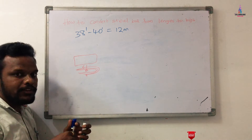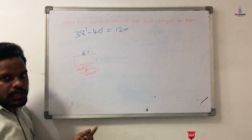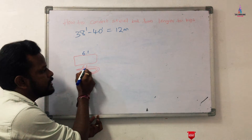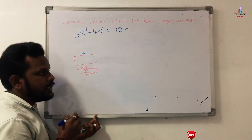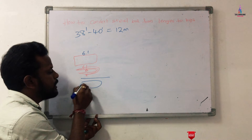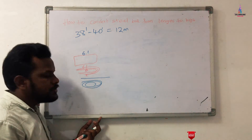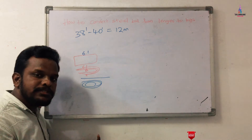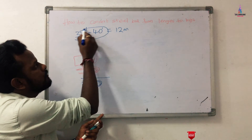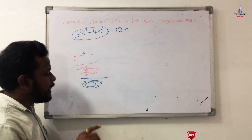As per transportation engineering, the length of the vehicle is fixed at 6.1 meters. It is difficult to transport bar lengths greater than 12 meters. You could bend the bar to straighten it, but bending bars over that distance makes transport from one place to another difficult. For that reason, the bar length was fixed at 38 to 40 feet based on the length of the vehicle.